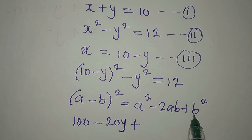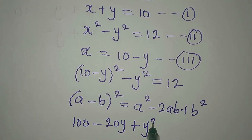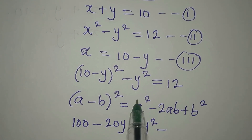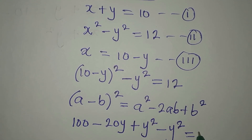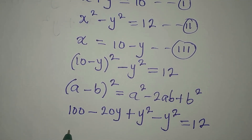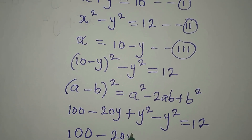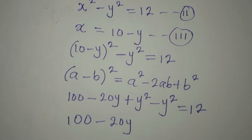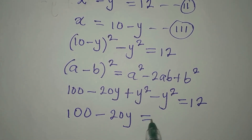Then plus b squared, which is y squared. We also have minus y squared from outside the bracket. So we have 100 minus 20y plus y squared minus y squared, all equal to 12. The y squared terms cancel out.